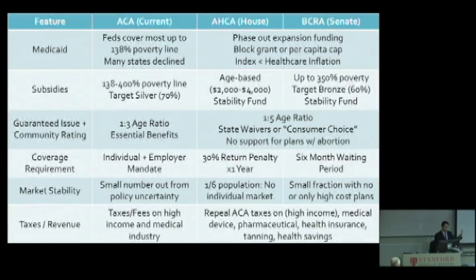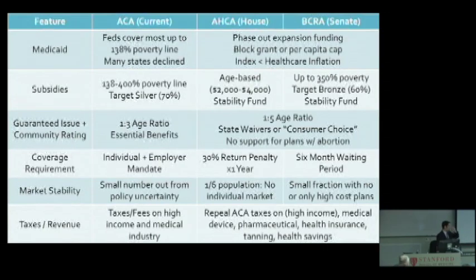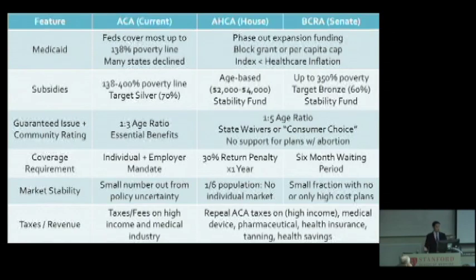Let me go through some of this quickly because some of these reform laws seem to have stalled, but it's worth understanding the components. The first column is the ACA — the Affordable Care Act, commonly called Obamacare — that's what's in place right now. The American Health Care Act was the plan passed by the House back in May. The Better Care Reconciliation Act was the bill the Senate was trying to put together but ultimately did not pass — ironically because some senators thought it was too conservative and some thought it was not conservative enough.